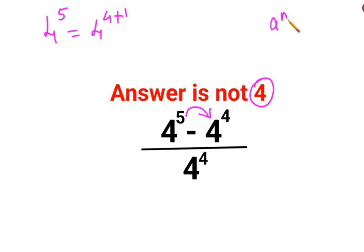And we know that in indices, a raised to m plus n can be written as a raised to m into a raised to n. So here I can write this as 4 raised to 4 into 4 raised to 1.